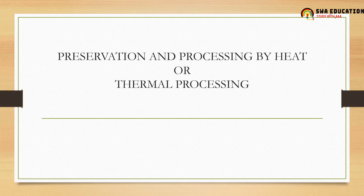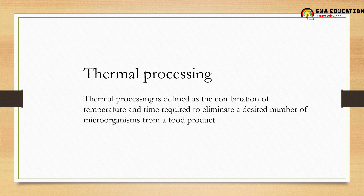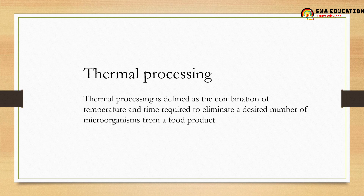Before we look at the types, let's get into the definition of thermal processing. Thermal processing is defined as a combination of temperature and time required to eliminate a desired number of microorganisms from a food product. We know there are many types of microorganisms — mesophiles, thermophiles, psychrotrophs and so on — and each has a specific combination of temperature and time.